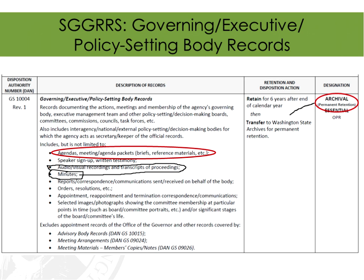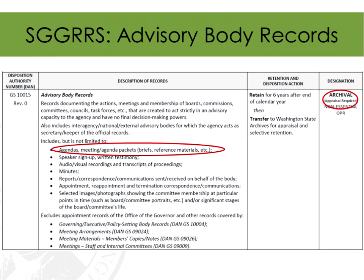Those records are listed as archival permanent retention, meaning either your agency keeps them forever or the archives keeps them forever — and those records are never going to go away. We encourage agencies to transfer those records to us once they've met their retention. Your agency is only obligated to keep them for six years after end of calendar year, then we encourage you to make it our responsibility to preserve and provide access going forward. With advisory body records, the designation is 'archival appraisal required,' meaning the archives needs to appraise them for historical value before they come to us — and we can do that with you prior to the transfer process.